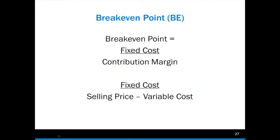In order to calculate the break-even point, there are two formulas. The formula is: fixed costs over my contribution margin. For example, if my fixed costs were $10 over my contribution margin of $25, that would give me my break-even point. That's relatively simple to remember and you can memorize that.